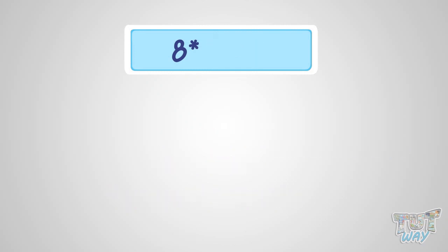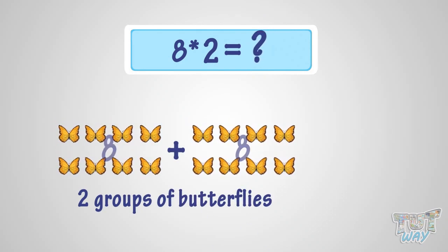What is 8 multiplied with 2? It is the same as two groups of 8 butterflies. So it is 16 butterflies. That is, 8 multiplied by 2 is 16.